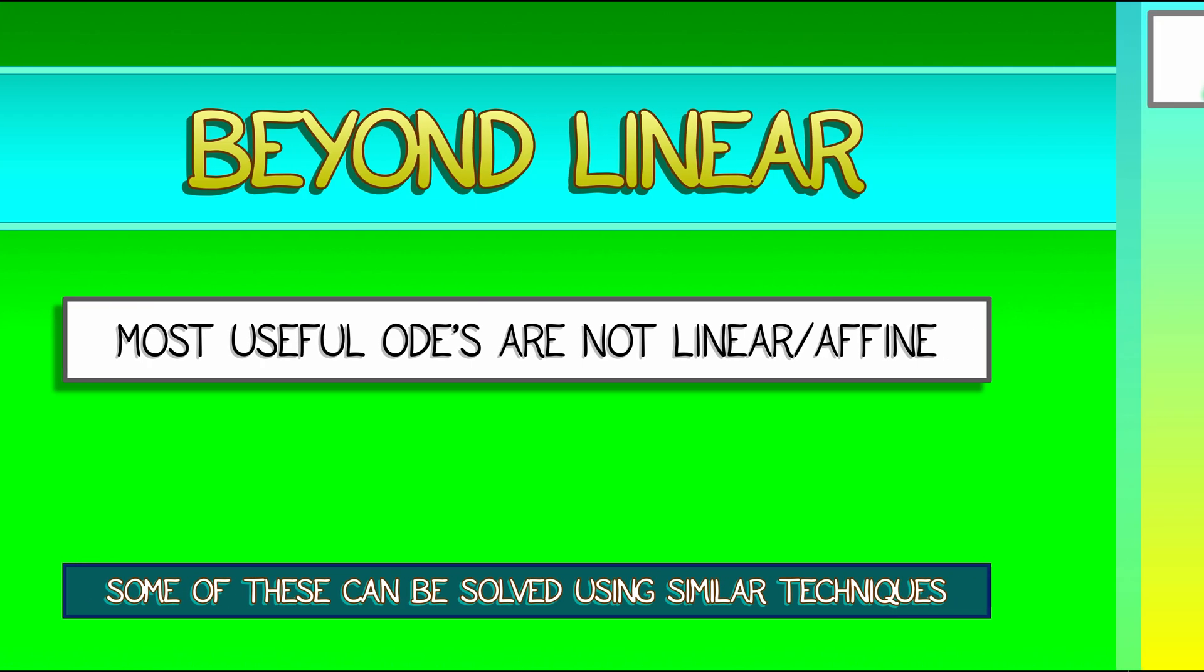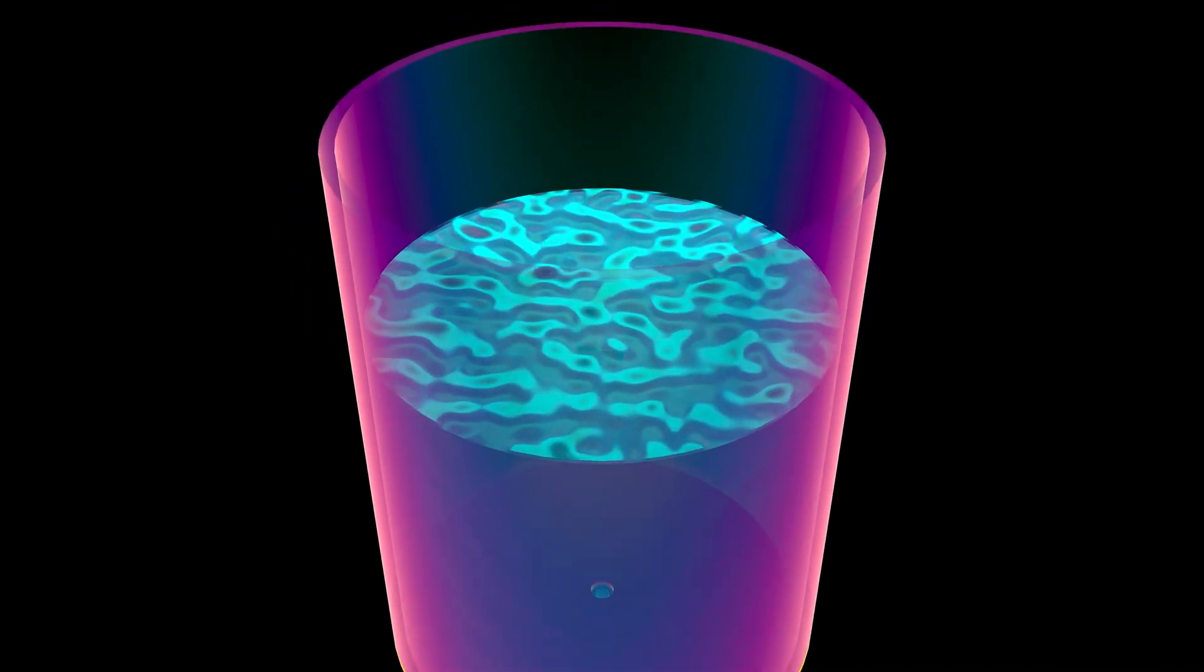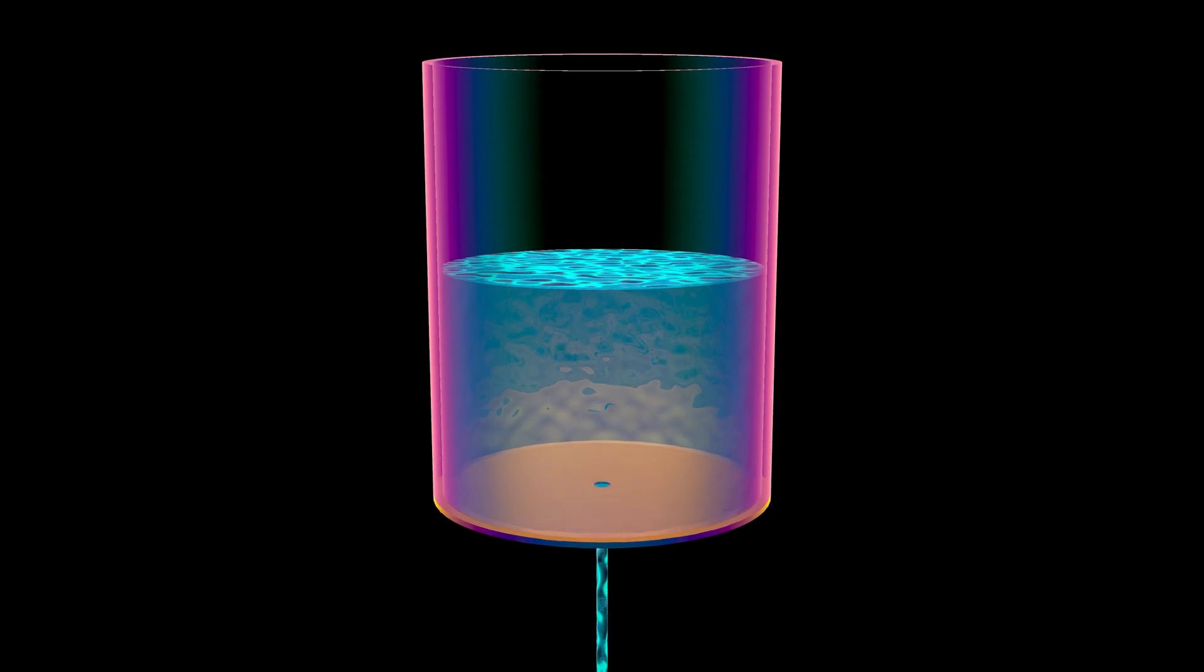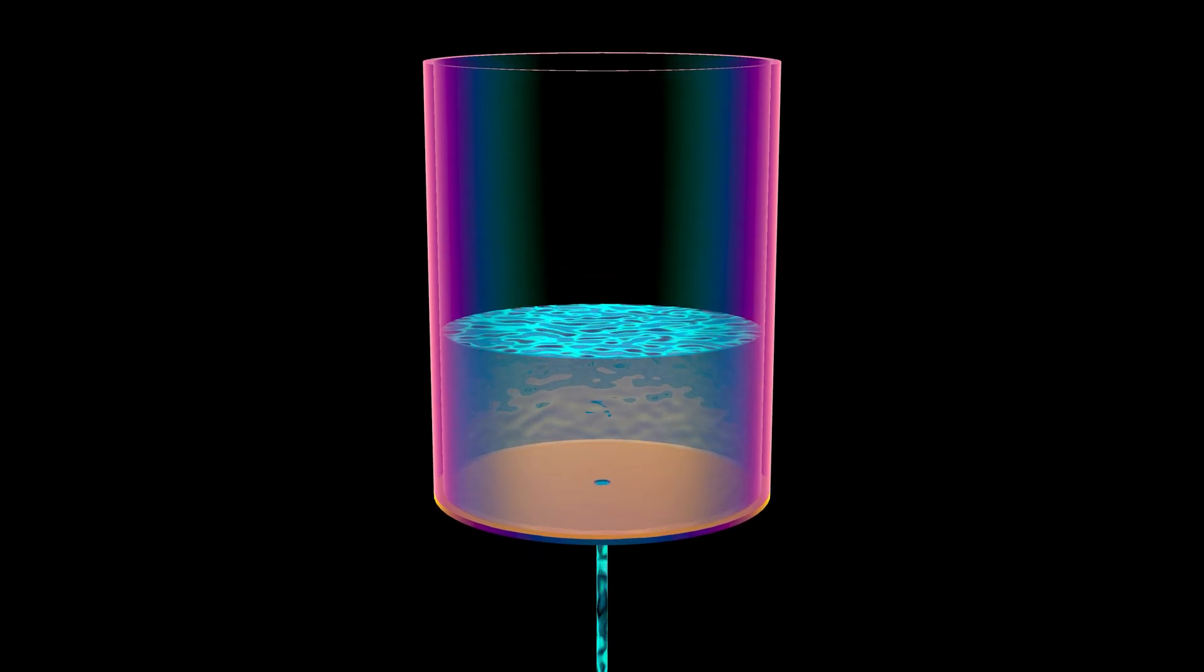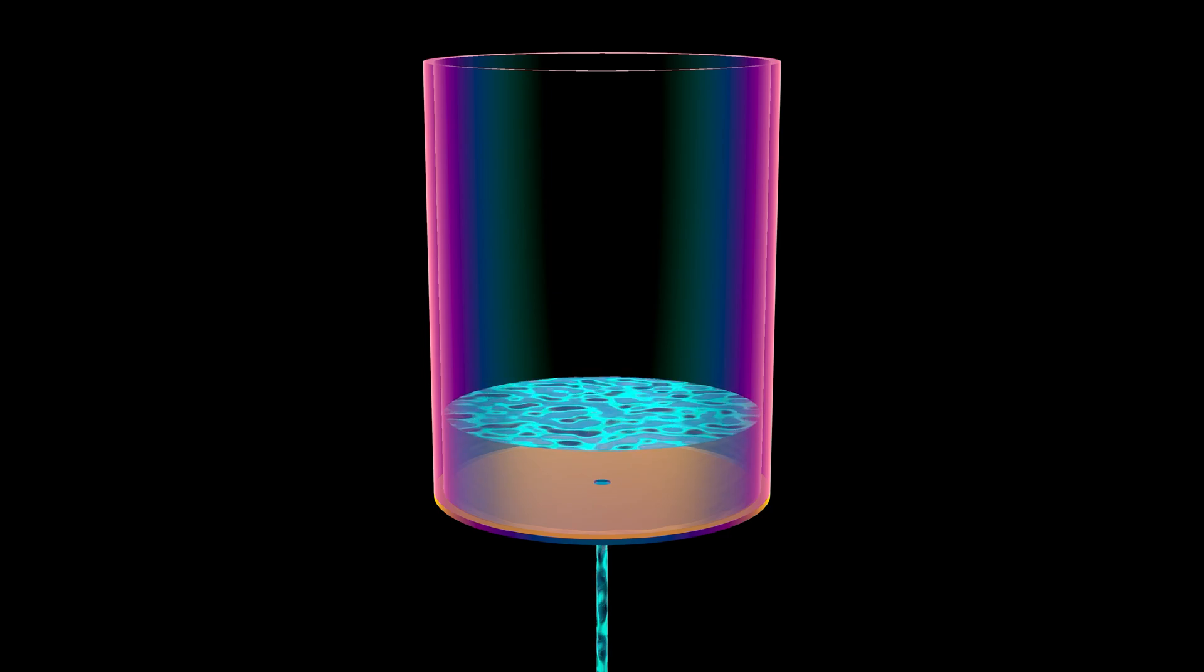To get started, let's think of the following example. Consider a tank, a tank full of water, and there's a hole in the bottom of the tank and the water is spilling out, it's draining out, and the height of the fluid in that tank is decreasing. But at what rate?